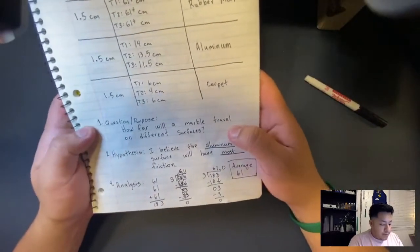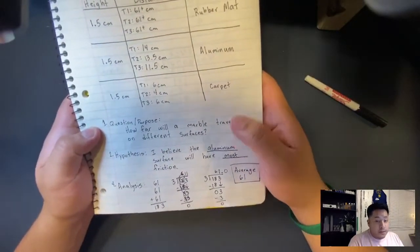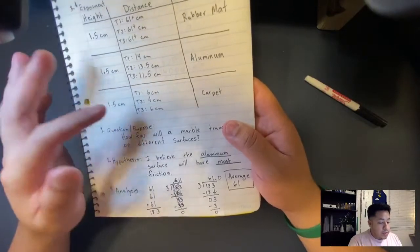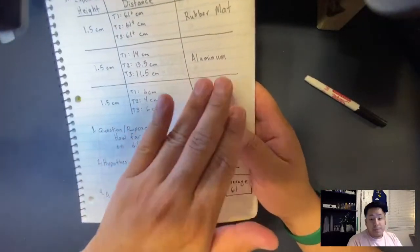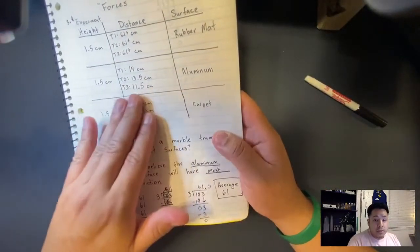So the question was, how far will a marble travel on different surfaces? The height didn't change. The only thing that changed was the surface. And because the surface changed, the distance changed.